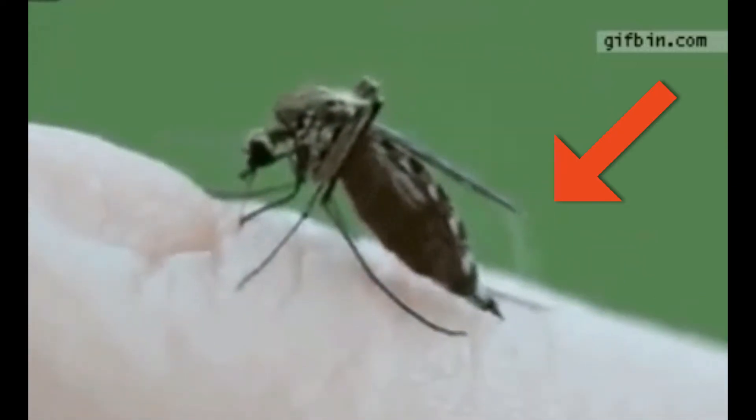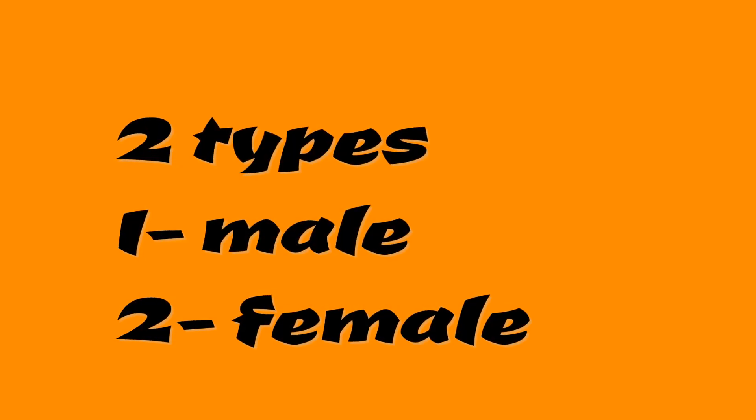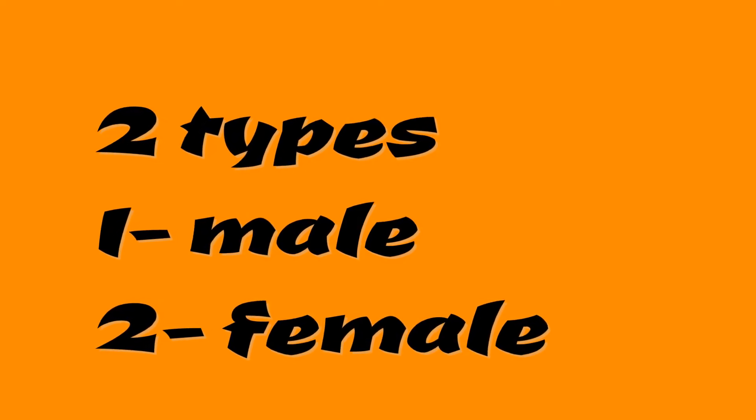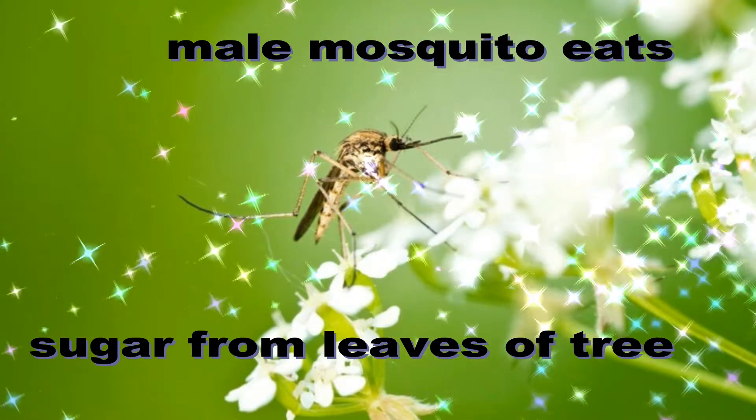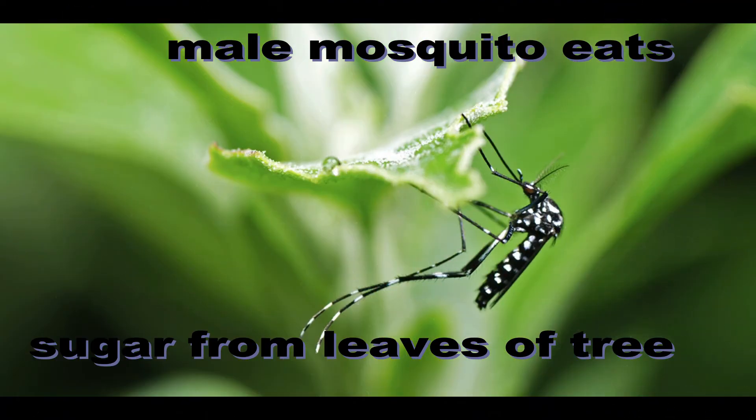In any species, we have genders. Similarly, in mosquitoes also, we have female mosquitoes and male mosquitoes. In order to live on the earth, any species has to eat something. Even for mosquitoes, they eat sugar from the leaves of plants.